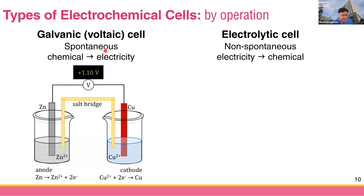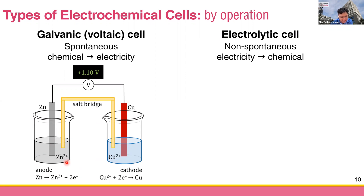The most classic example is the copper and zinc cell. If you have two half cells — one half cell is zinc and Zn²⁺, and another is copper and Cu²⁺ — because the electrode potential of copper is higher than zinc, the copper half cell undergoes reduction: Cu²⁺ is reduced to copper solid and deposits on the copper electrode. In contrast, zinc is oxidized to Zn²⁺, so you lose some solid zinc and get more Zn²⁺. This is oxidation, and the electrode with oxidation is called the anode.